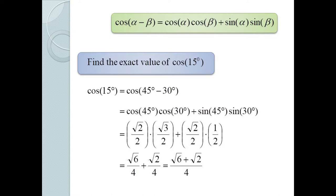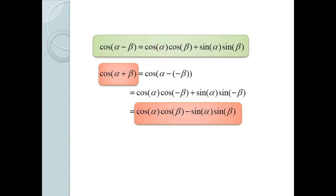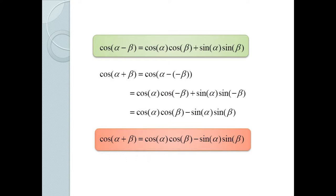Now that we have a formula for cos(α − β), the other three formulas follow quite easily. For example, cos(α + β) equals cos(α − (−β)). Applying our difference formula gives cos α cos(−β) + sin α sin(−β). Then by our even-odd identities this equals cos α cos β − sin α sin β. So the cosine of the sum is the same as the cosine of the difference except the plus changes to minus.